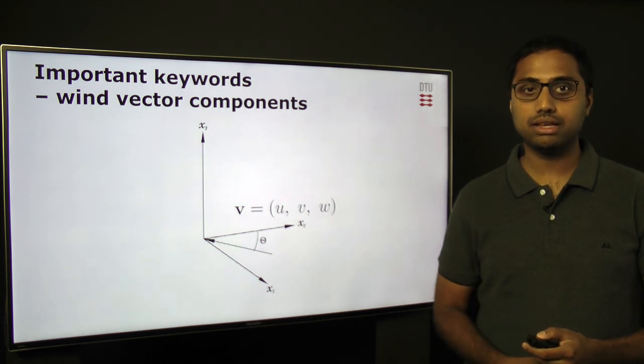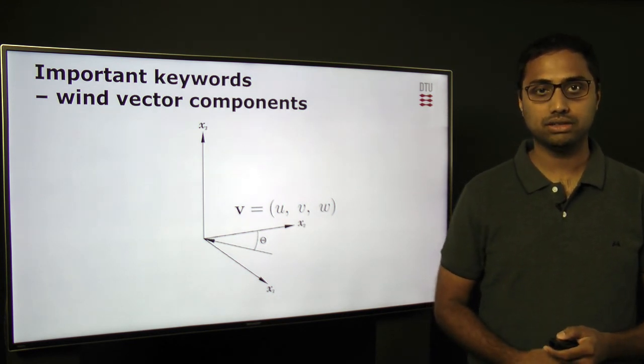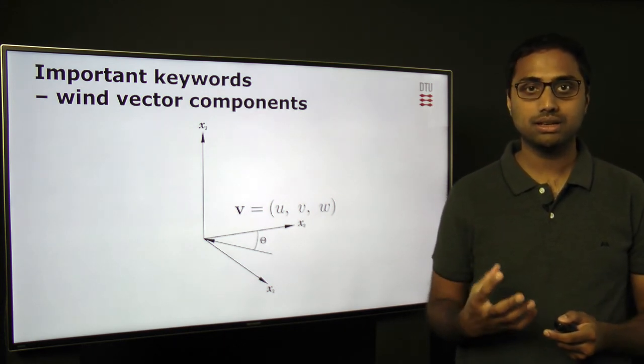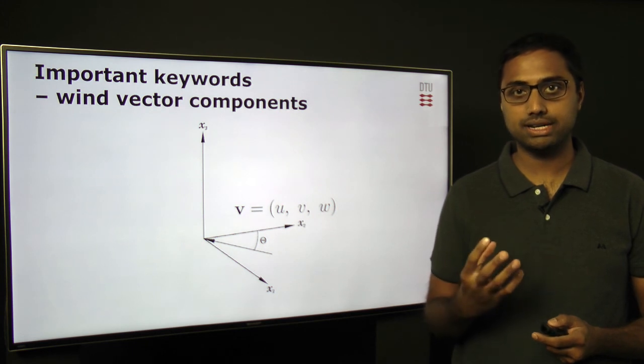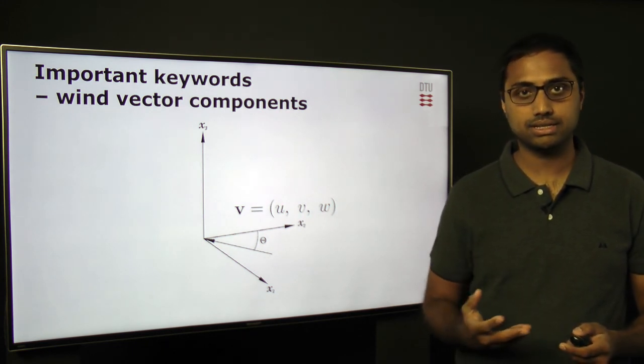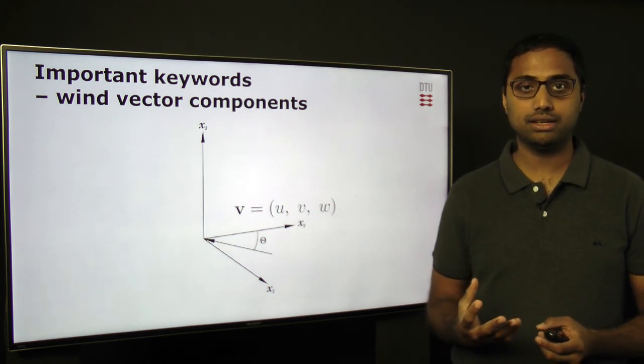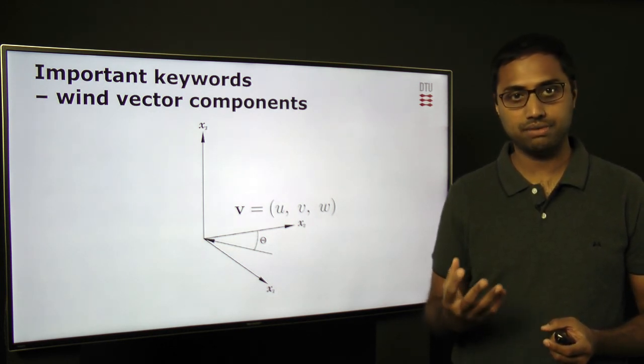What are the important keywords used in wind energy? First and foremost, we need to understand that when we study turbulence, some understanding of the coordinate system, the base coordinate system, the transformed coordinate system, and vector and matrix computations is very important.